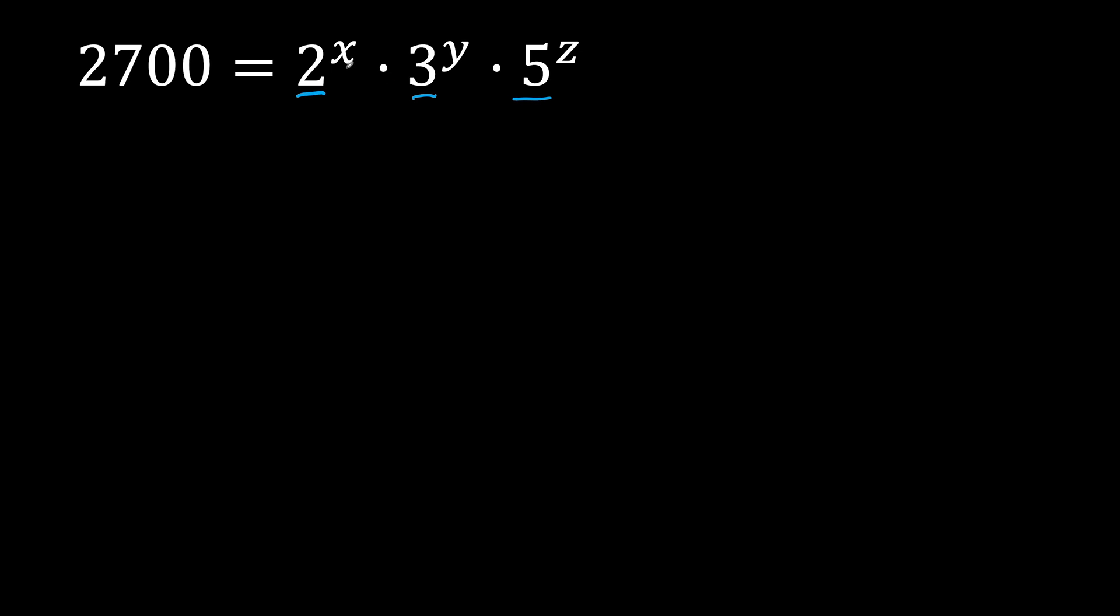We just need to find these powers x, y, and z. There is nothing to do on the right side. So, let's break down 2700 into 2s, 3s, and 5s.